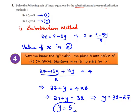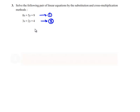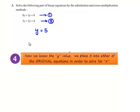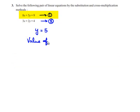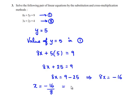We have found the value of y which is equal to 5. Now let us substitute the value of y, which is 5, in equation 1. We get 8x plus 5 times 5 is equal to 9, so 8x plus 25 is equal to 9. Therefore 8x is equal to 9 minus 25, which gives 8x is equal to minus 16, so x is equal to minus 16 divided by 8, which is minus 2. Therefore the values are x is equal to minus 2 and y is equal to 5.